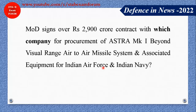The Ministry of Defence has signed a 2,900 crore contract with which company for procurement of the Astra missile? Astra is a Beyond Visual Range missile. BDL — Bharat Dynamics Limited — has won this procurement contract and will manufacture the Astra Mark 1 missile.